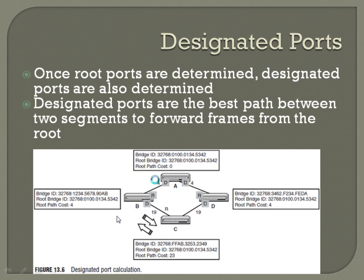Once root ports are determined, designated ports are also determined. Designated ports are the best path between two segments to forward frames from the root. All root ports are marked with an R. The root port from C goes through B to A; the root port from B is the direct connection to A; the root port from D is the direct connection to A. Everything pointing back the other direction becomes designated ports. Both ports on A are designated ports because they're the quickest link to B and D. The designated port on B is the direct link to C. And even though D doesn't have a root port on that side, the quickest link between D and C makes that port on D a designated port as well.